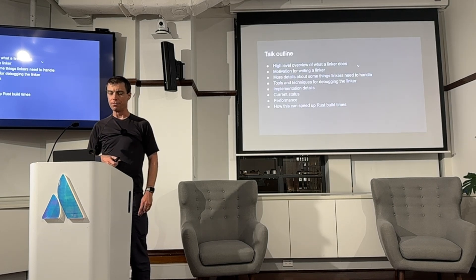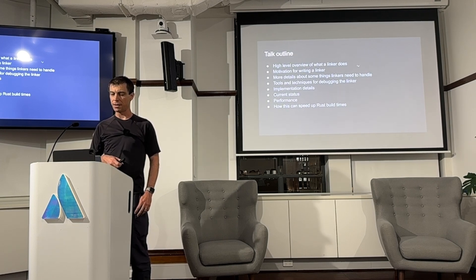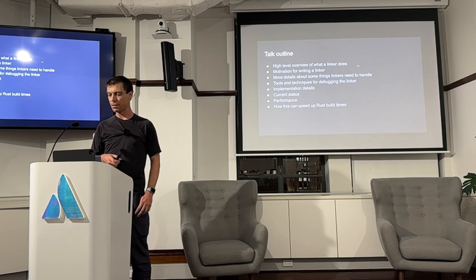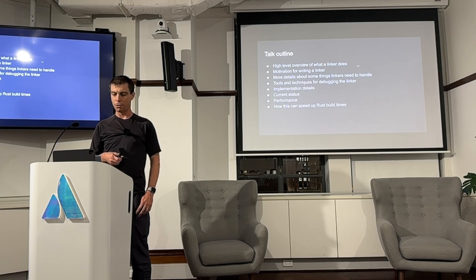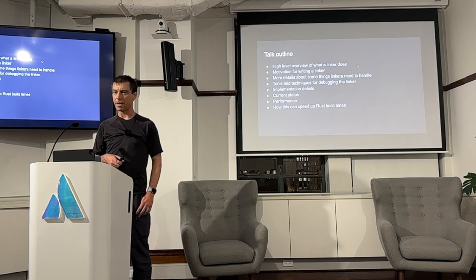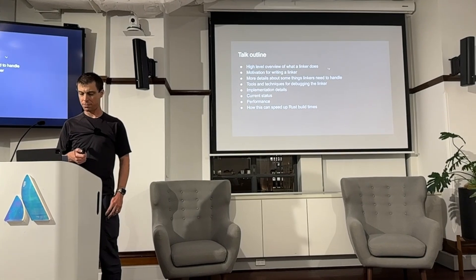I'll start by giving a high-level overview of what a linker does, talk about some motivations for why I'm writing a linker, then go into some more details about some of the weird things that linkers need to handle. I'll talk about tools and techniques for debugging, the implementation details, the current status and performance, and how all of this can be used to speed up Rust compile times.